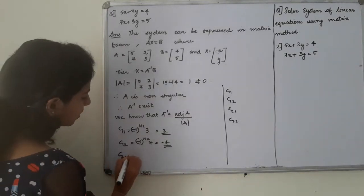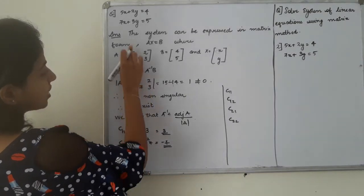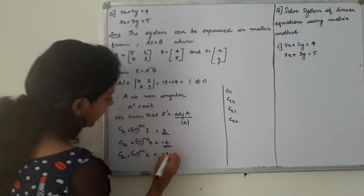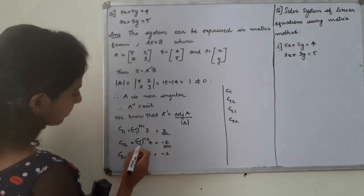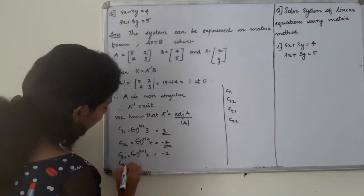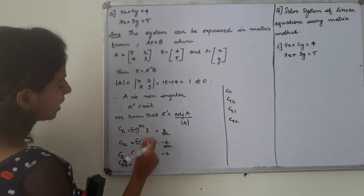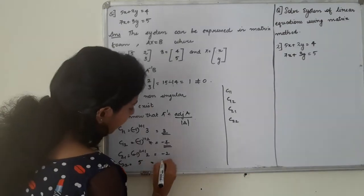C21, minus 1 raise to 2 plus 1. In this position, the following column hiding will be 2. That is, minus 2. That is the value. Now, C22, minus 1 raise to 4. That is, we value 1. Then, we value the column hiding will be 5. Okay.